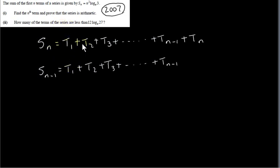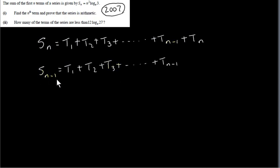I want to make a few observations and then we'll do an example. The sum of the first n terms of any series — arithmetic, geometric, it doesn't matter — is t₁ + t₂ + t₃ up to tₙ. The second last term is tₙ₋₁. If we want the sum of the first n−1 terms, we write t₁ + t₂ + t₃ but the last term is tₙ₋₁.